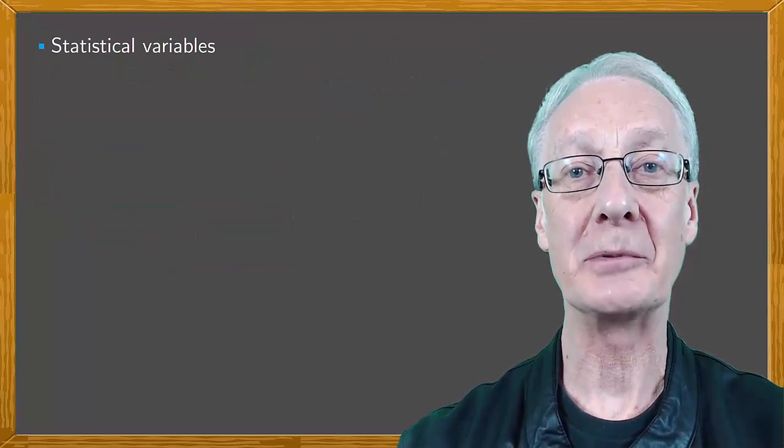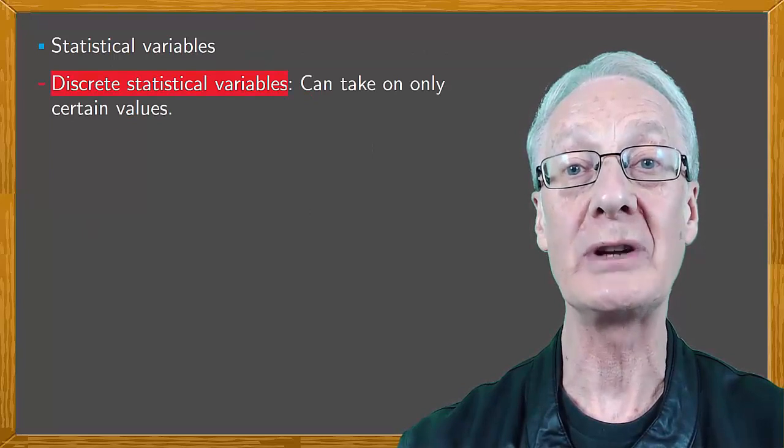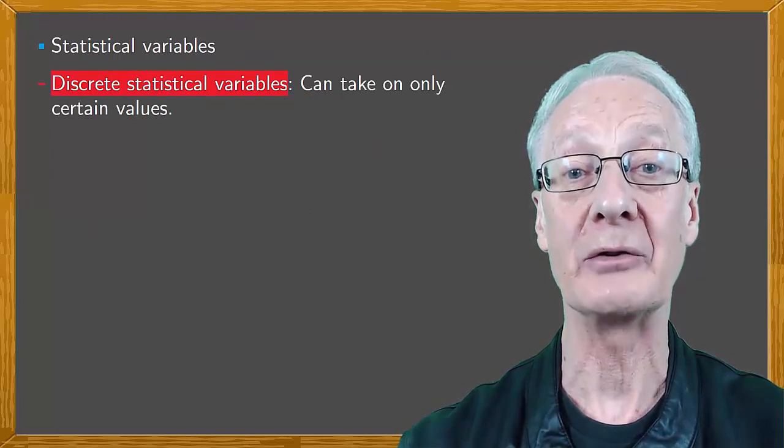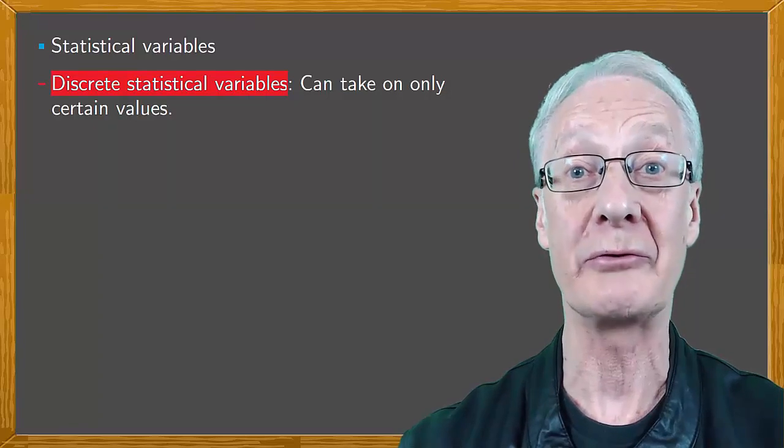Statistical variables may be discrete or continuous. Discrete variables can take on only certain values, for example the number of children in a family: 0, 1, 2, 3 and so on.